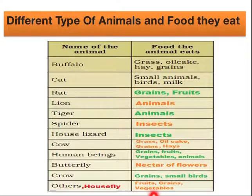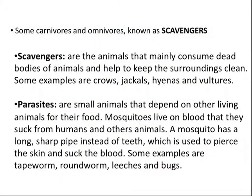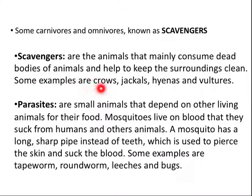Some carnivores and omnivores are also known as scavengers. Scavengers are animal species that mainly consume dead bodies of animals and help to keep the surrounding clean. Some examples are crows, jackals, hyenas, and vultures.